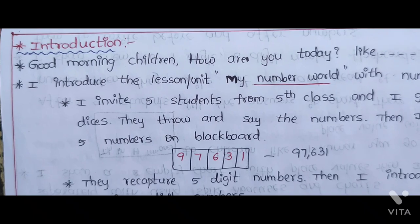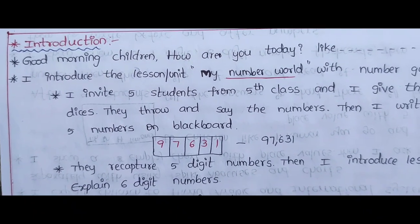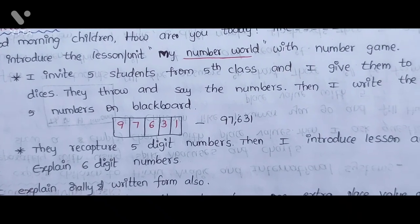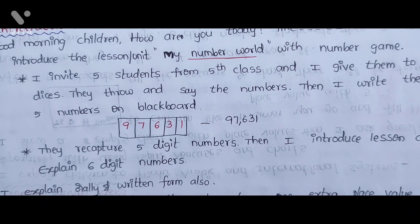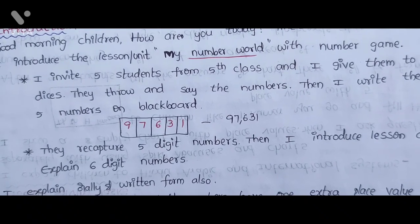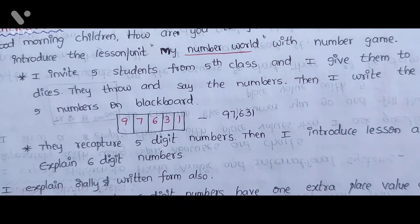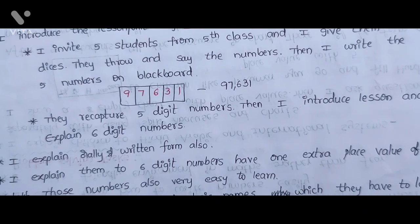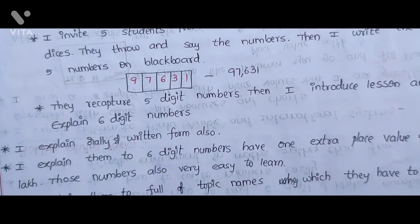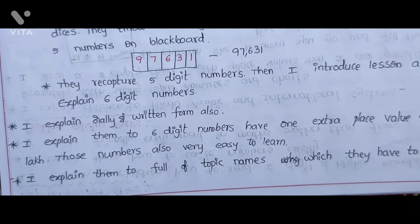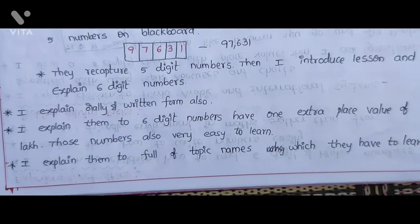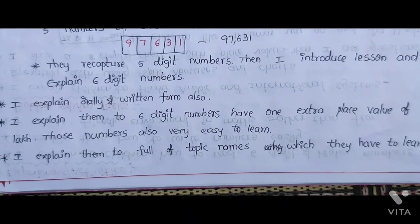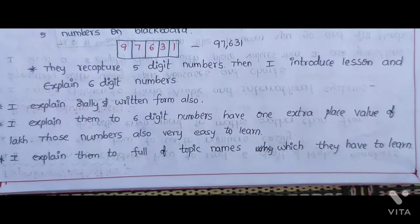Introduction: Good Morning Children, How are you today? I introduce the lesson My Number World with a Number Game. I invite 5 students from 5th Class and give them dice. They throw and say the numbers. I write the 5 numbers on the blackboard — for example: 9, 7, 6, 3, 1 — and they recapture 5-digit numbers. Then I introduce the lesson and explain 6-digit numbers, both orally and in written form. I explain that 6-digit numbers have one extra place value of lakh. I explain all the topic names they have to learn.